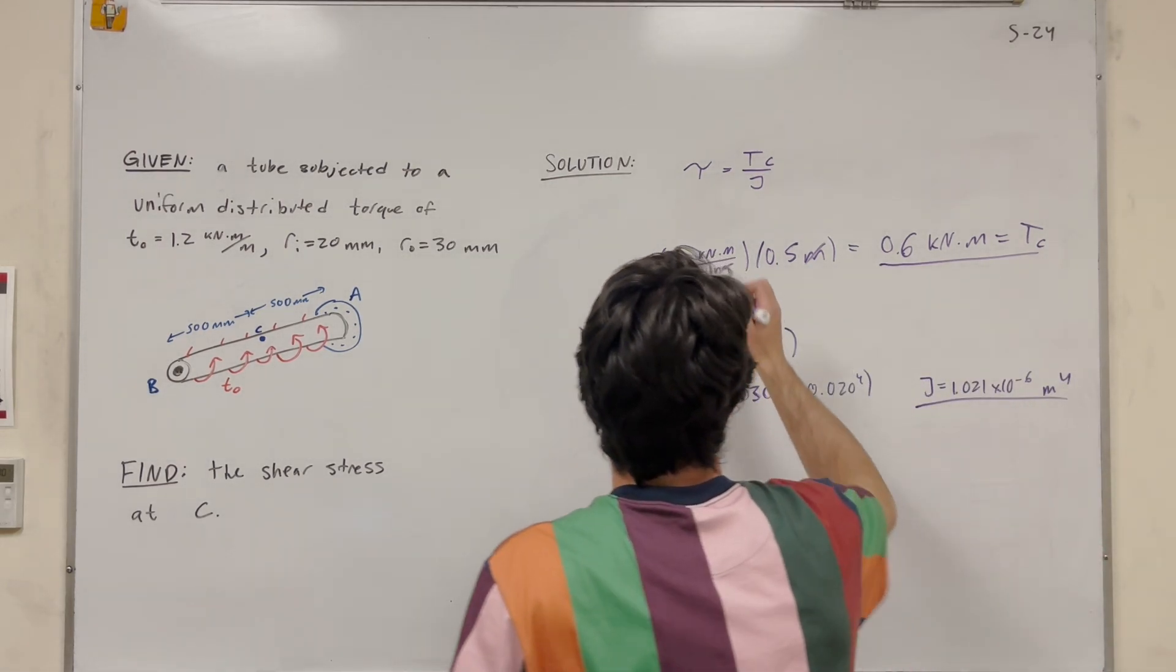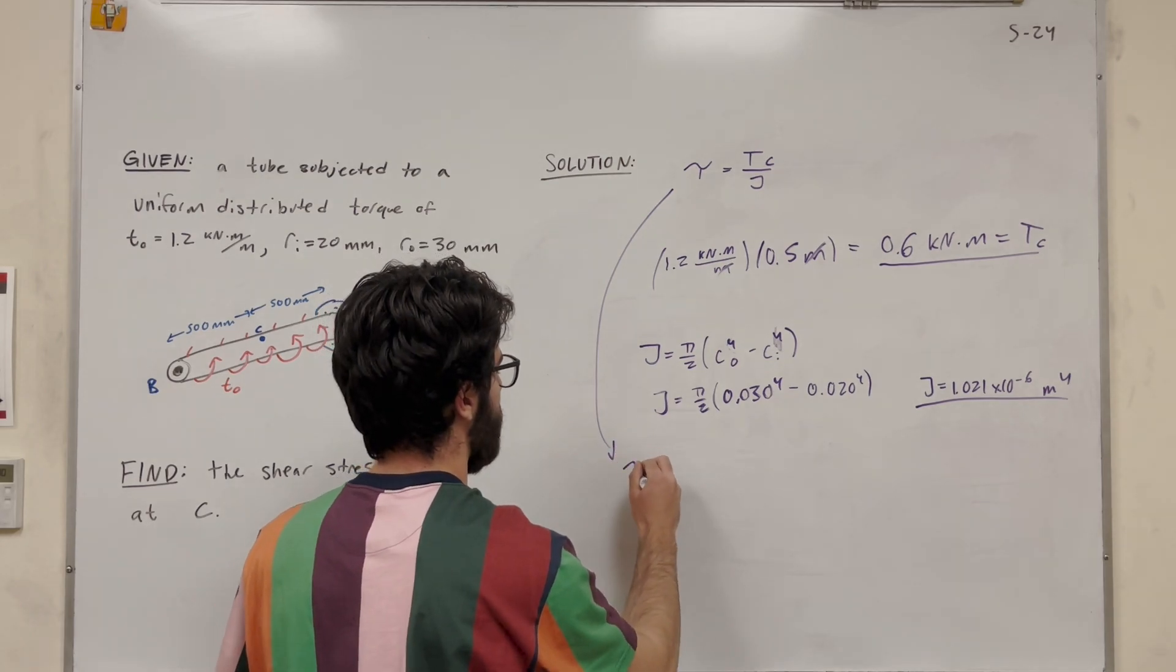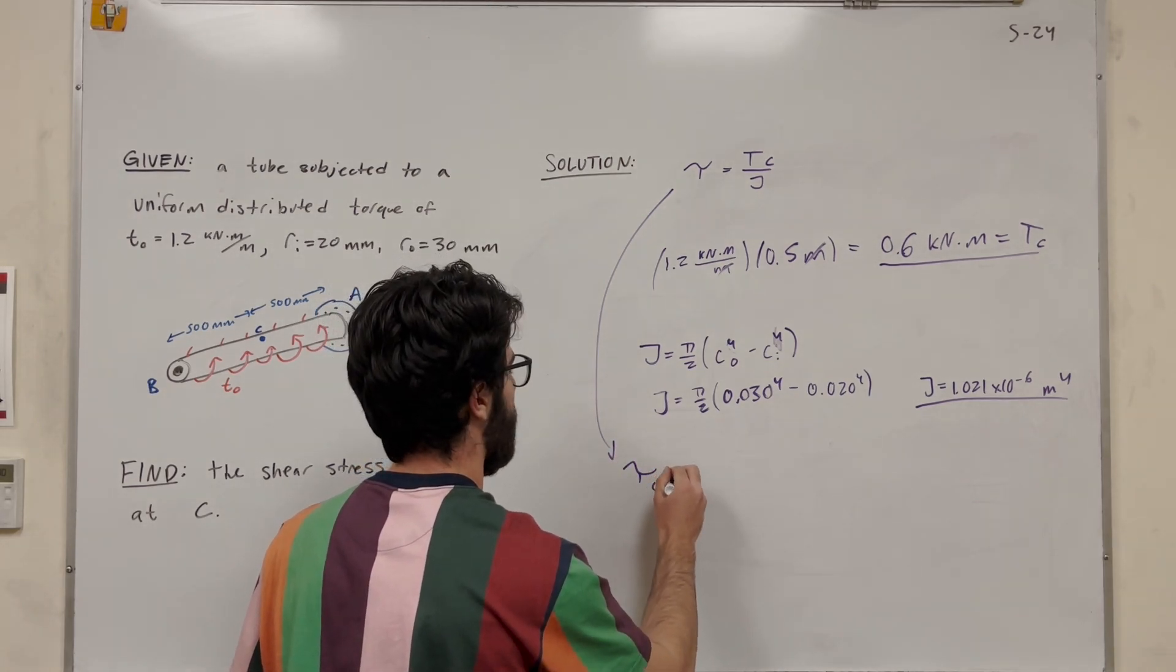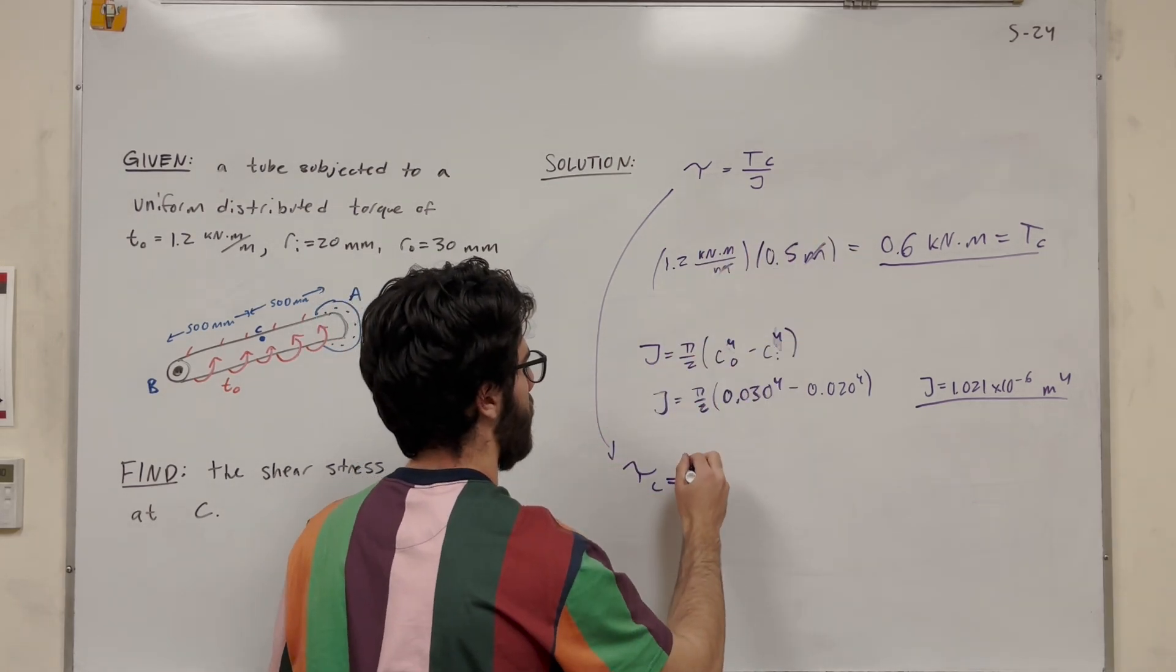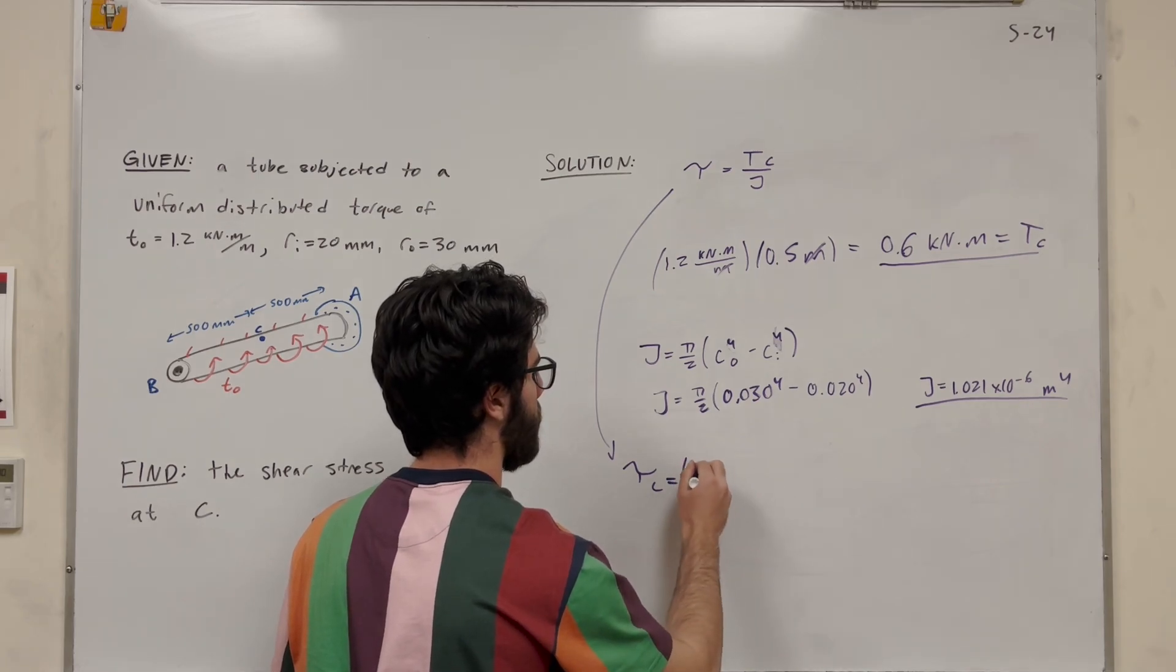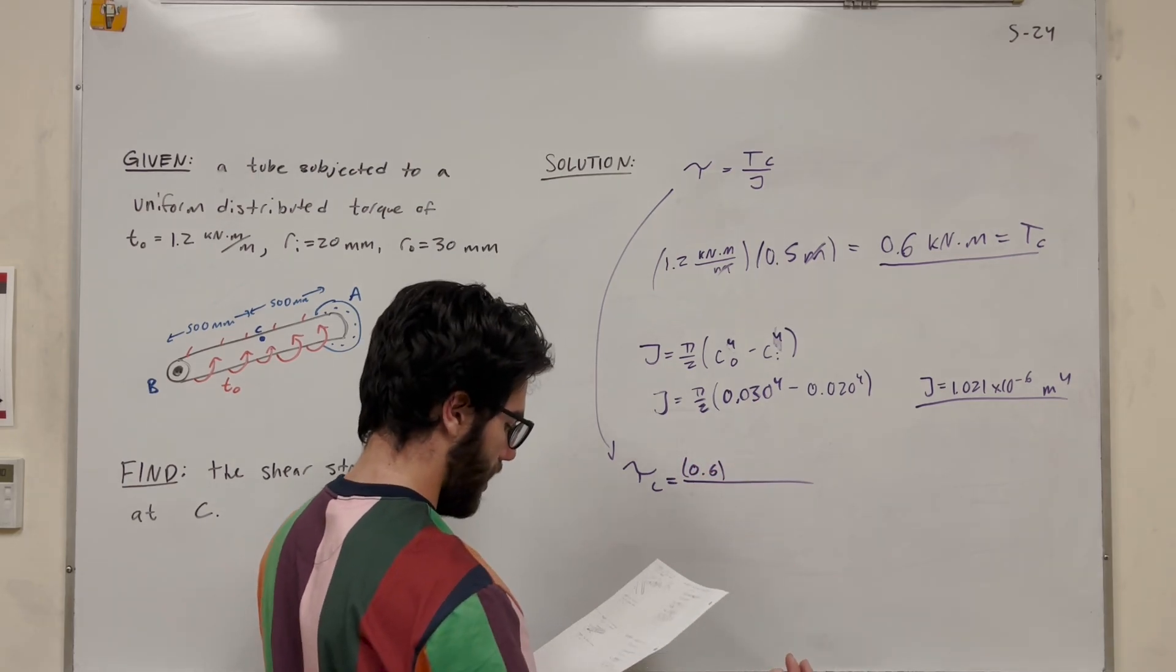All right, so very small number. So finally, we can just go ahead and solve for this equation. So we can find the shear stress at C is equal to the torque. We found it at 0.6 kilonewtons. So we're going to convert. We can keep it in kilonewtons, or we can convert it to newtons.